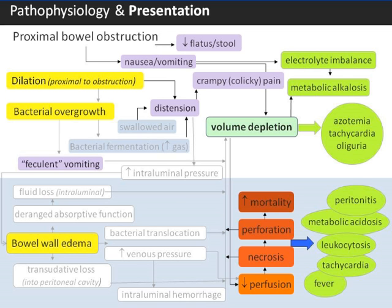Presentation of small bowel obstruction is nonspecific. Common symptoms and signs are highlighted in purple and green here. Typical presentation includes crampy abdominal pain, as in waves or colic, nausea, vomiting, little or no flatus in stool or obstipation, and signs of volume depletion. Keep in mind that early in the course of obstruction, peristalsis may increase above and below the point of obstruction, leading to frequent loose stools and flatus. Also watch out for non-abdominal causes of upper abdominal pain, nausea, and vomiting, such as pneumonia or myocardial infarction.